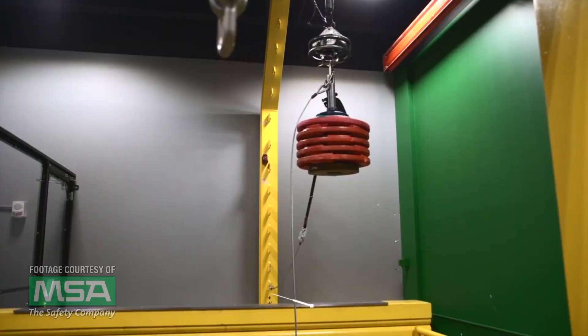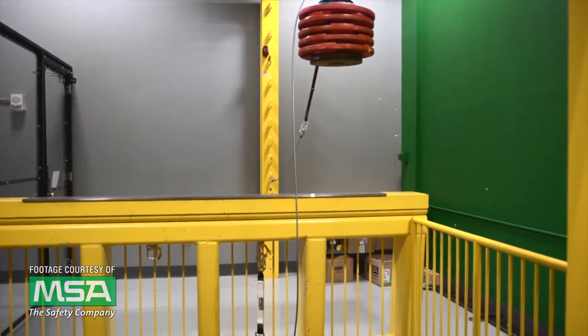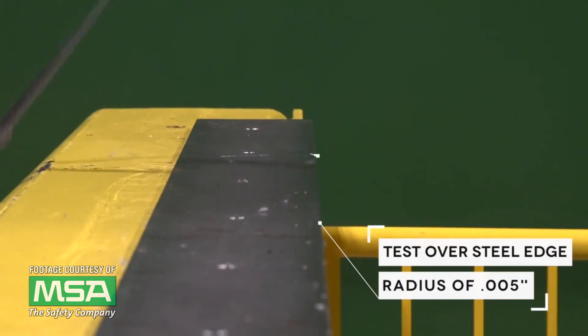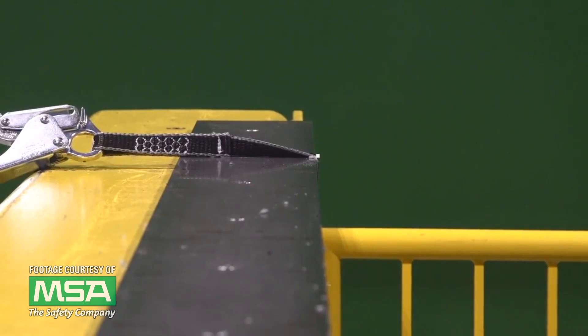In order for an SRL LE to meet ANSI Z359.14 for leading edge, it must have an integrated shock absorber and pass drop tests over a sharp structural steel edge. The testing procedure for that standard includes drops over an edge that is .005 inches or less in radius.